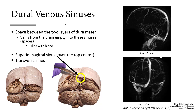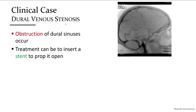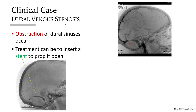We can see another view from the posterior. There is an actual blockage on the right-hand side of this image — an obstruction in one of the dural sinuses, specifically the right transverse sinus. This venogram highlights the blood in a dark color, with a light area where there is no blood flowing through.